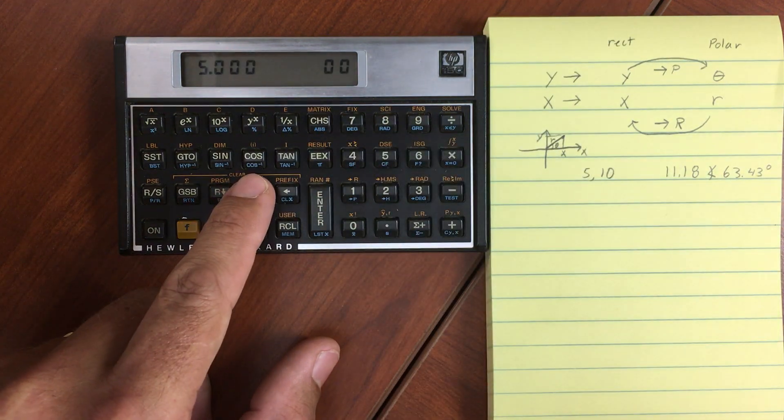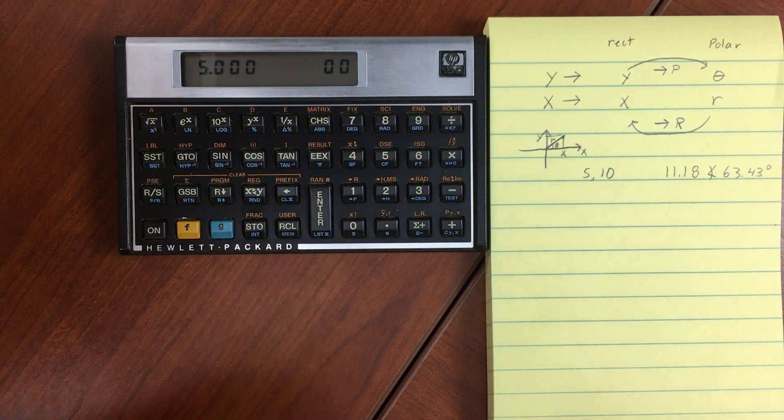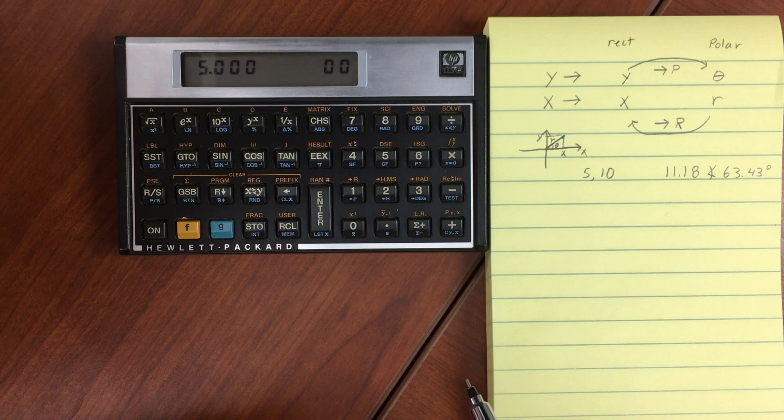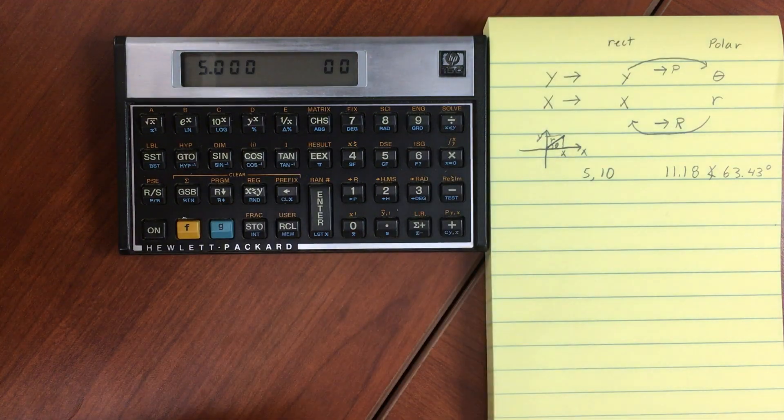So that gives me 5. And if I swap to look at the y, I've got 10. So you can swap back and forth from rectangular to polar and from polar to rectangular. And again, just note that depending on what mode you are in, degree, radians, grads, will determine what that angle is in.